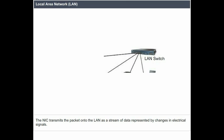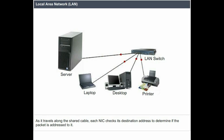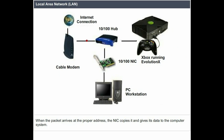The NIC transmits the packet onto the LAN as a stream of data represented by changes in electrical signals. As it travels along the shared cable, each NIC checks its destination address to determine if the packet is addressed to it. When the packet arrives at the proper address, the NIC copies it and gives its data to the computer system.